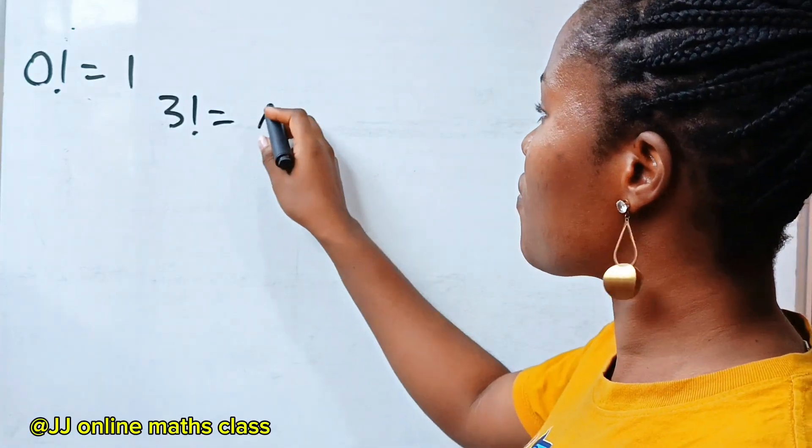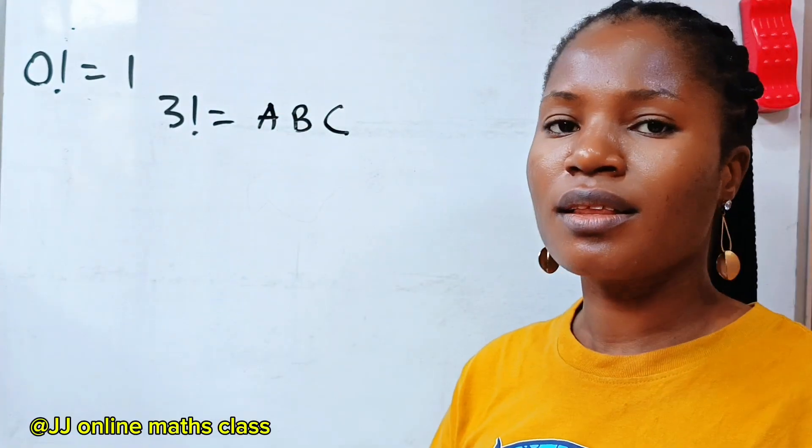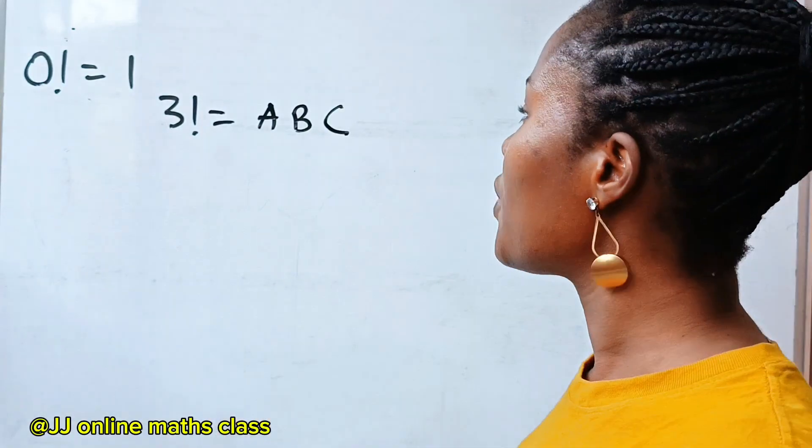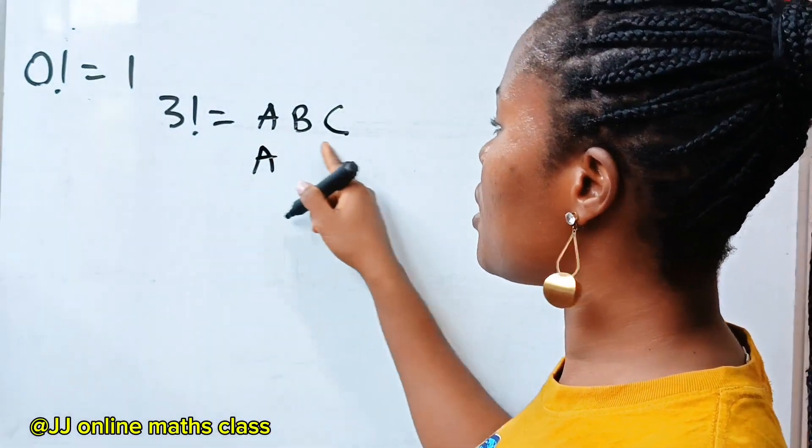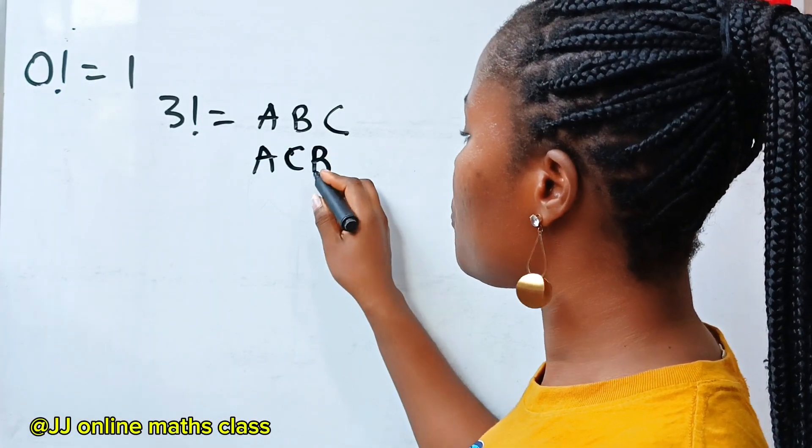So for example, if I have A, B, C. If I want to arrange these three items in a straight line, it's going to be A. This is already the first arrangement. Then I will change the position of C and B.